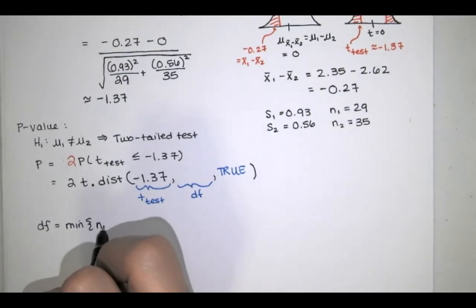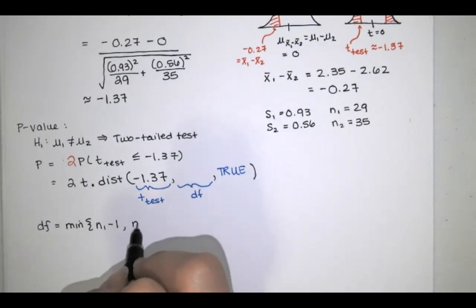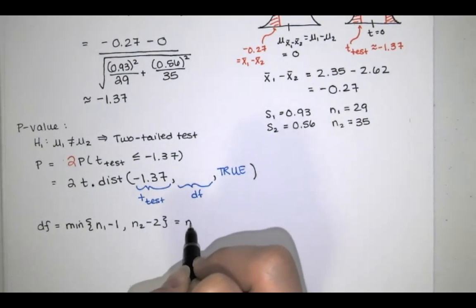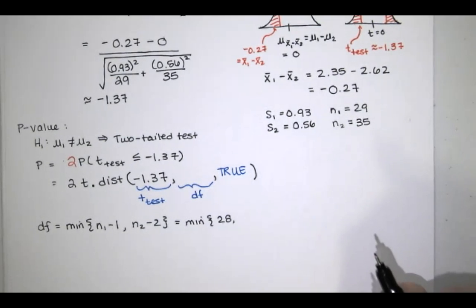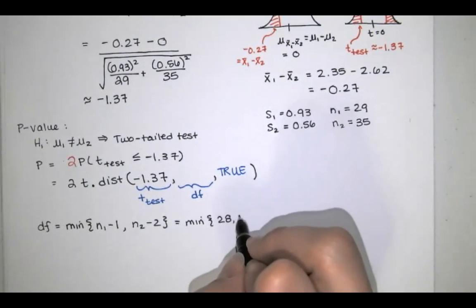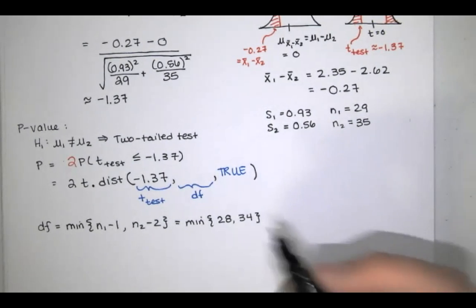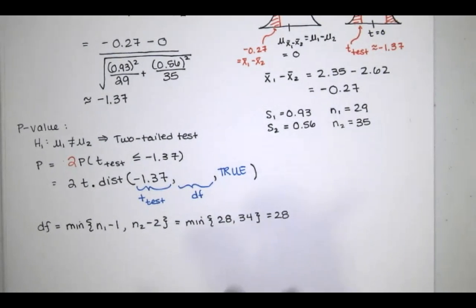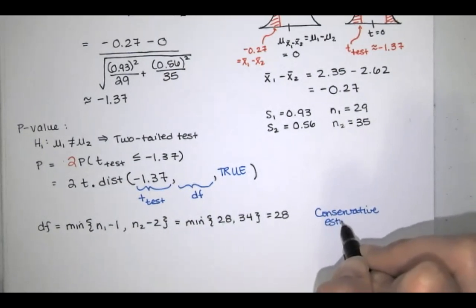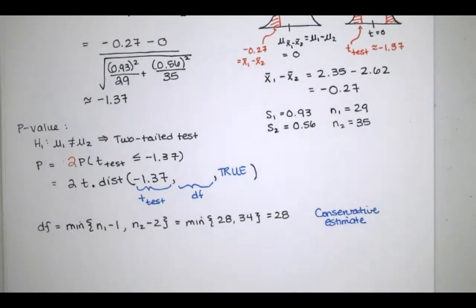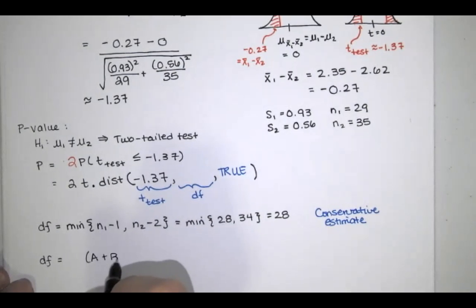The degrees of freedom can be handled a couple of different ways — conservative or more accurate. For a conservative estimate, the degrees of freedom are the minimum of n sub 1 minus 1 and n sub 2 minus 1. Our first sample had 29, giving df of 28, and our second sample had 35, giving df of 34. The minimum is 28, so the conservative estimate is df equals 28.